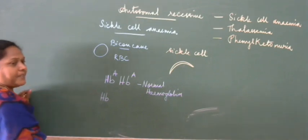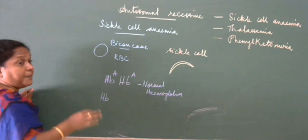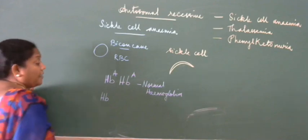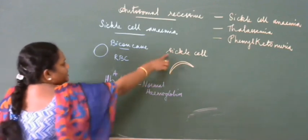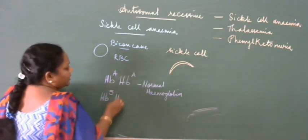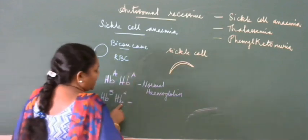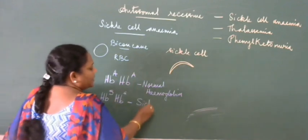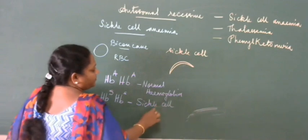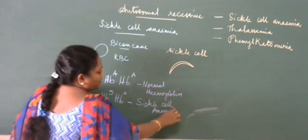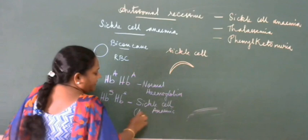If the person is fully affected with sickle cell anemia, you use the symbol S — S stands for sickle — so it is represented as HbS. Such patients are called sickle cell anemia patients, or affected persons.